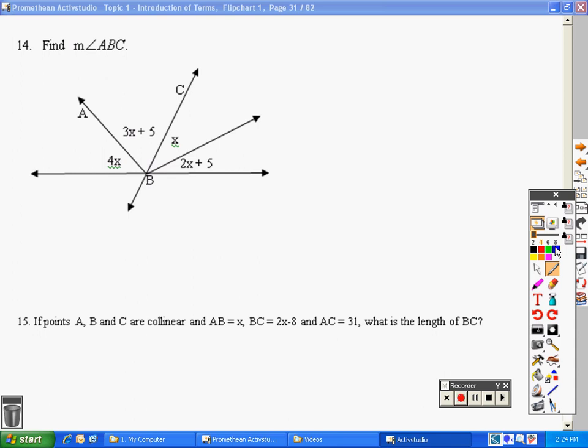We want the measure of angle ABC. So we are looking for, I'm going to highlight it, the measure of angle ABC, and that is ABC up here. Which means, looking at the diagram, automatically I know that I'm going to need to solve for X in order to get that value.